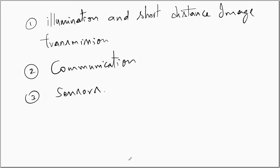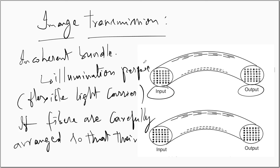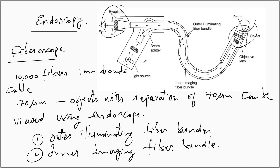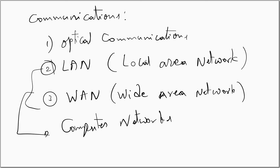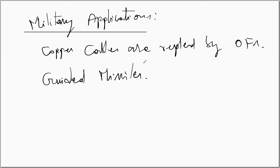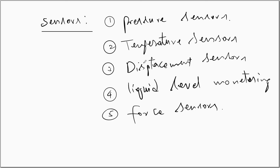In summary, fiber applications are categorized into three: illumination and short distance image transmission, communications, and sensors. In image transmission, we discussed two types of fiber bundles — incoherent fiber bundles, used for illumination and called flexible light carriers, and coherent fiber bundles, used for image transmission and called flexible image carriers. We saw the working principle of an endoscope, also called a fibroscope. In communications, optical fibers are used in telecommunications, LAN, and WAN. Medical applications include diagnostics, ophthalmology, cardiology, and cancer treatment. They are used in military and in sensors such as pressure, temperature, displacement, liquid level monitoring, and force sensors.